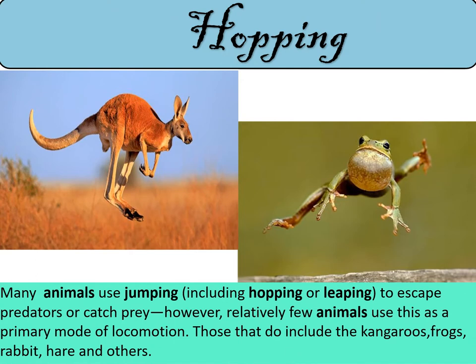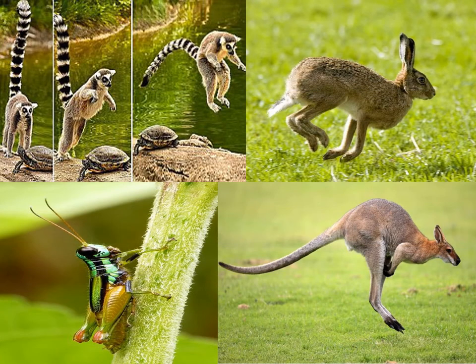The next movement is hopping. I know you all also like to hop, so let's learn about some hopping animals. Many animals use jumping, including hopping or leaping, to escape predators or catch prey. However, relatively few animals use this as a primary mode of locomotion. Those that do include kangaroos, frogs, rabbit, and hare. We also have grasshopper, chipmunks, hare, rabbit, and kangaroos.